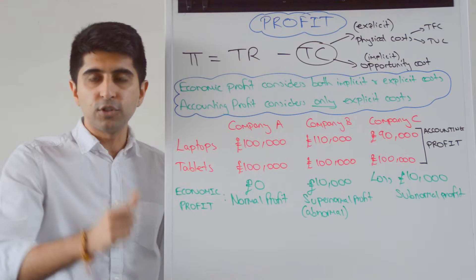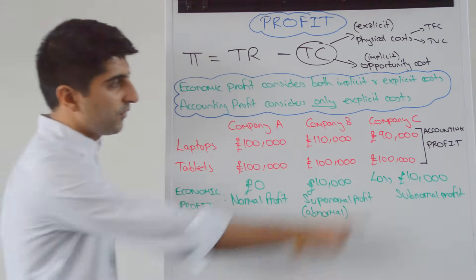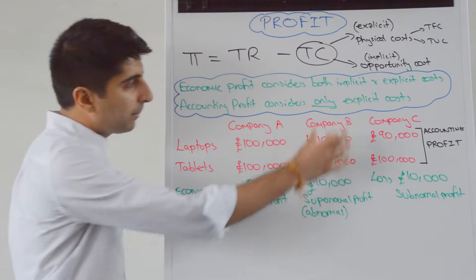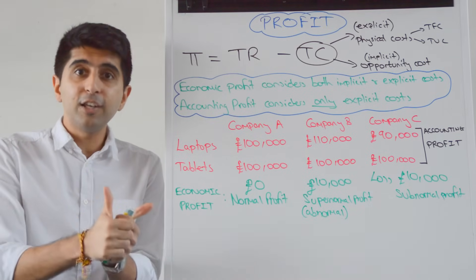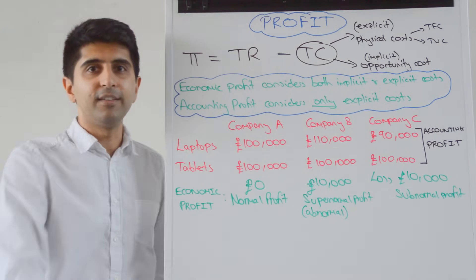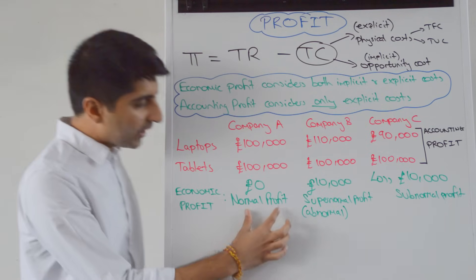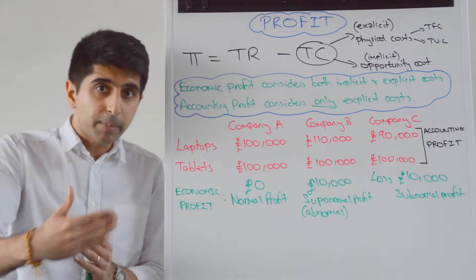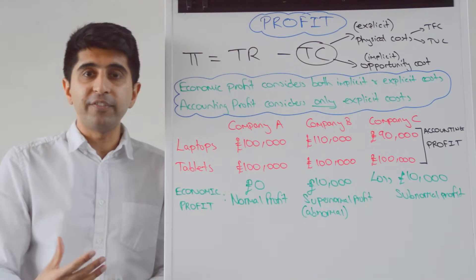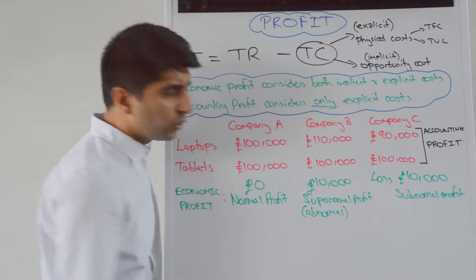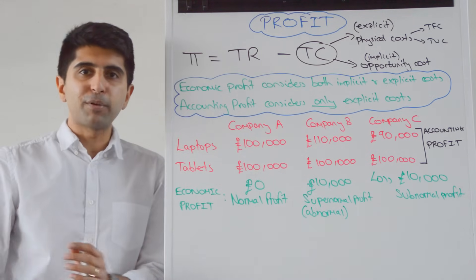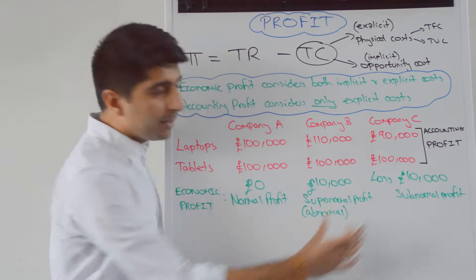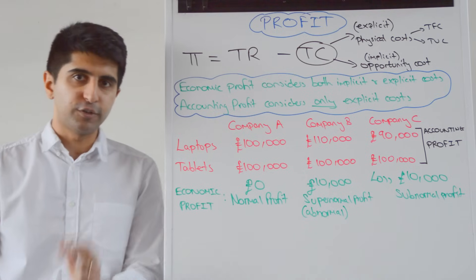Anything less than normal profit: switch your factors of production to producing your opportunity cost. So for company C, switch from making laptops towards making tablets. For company B, that's making even more than normal profit — continue what you're doing, you're making an excellent decision. Subnormal profit is any economic profit below normal profit, i.e. an economic loss, where profit is not enough to cover the opportunity cost of production.